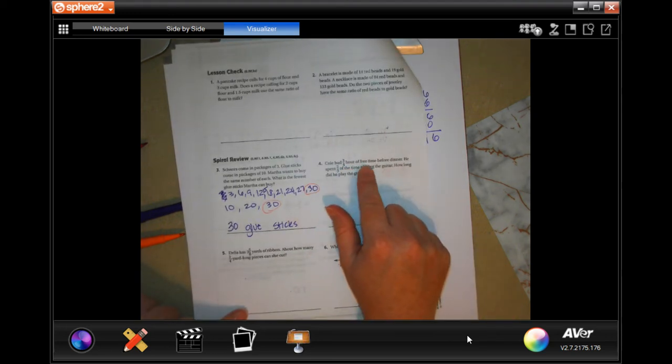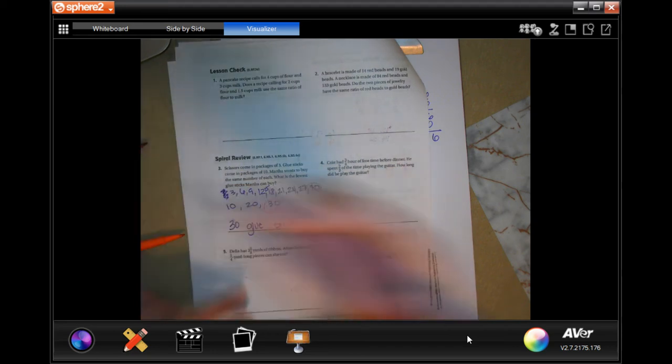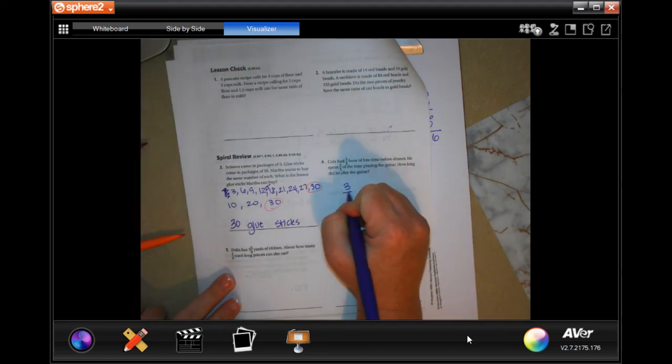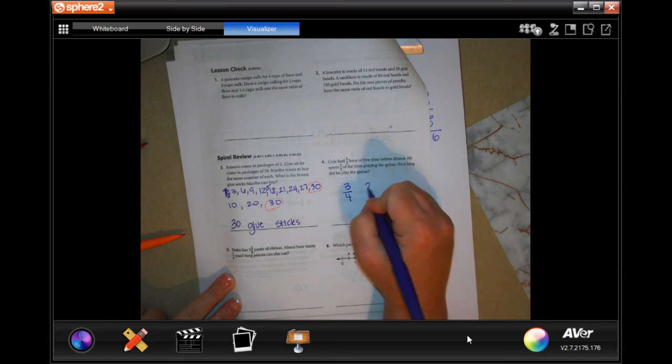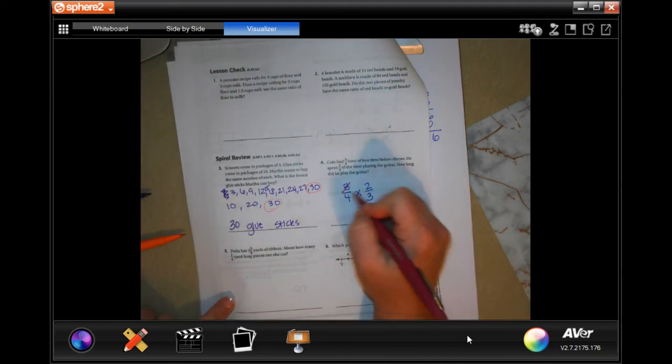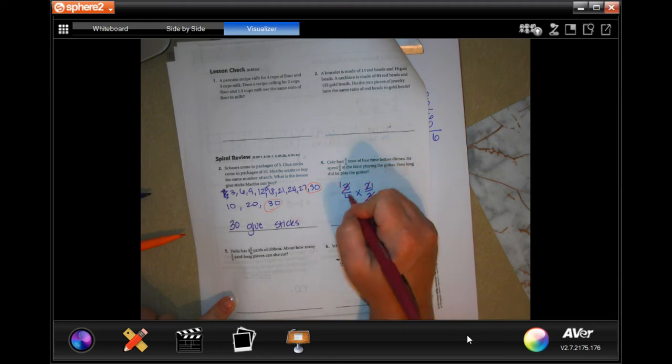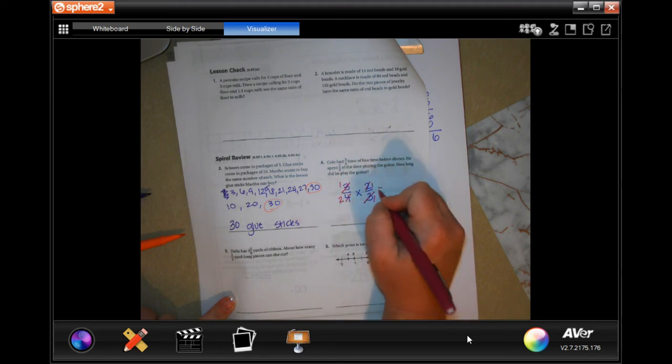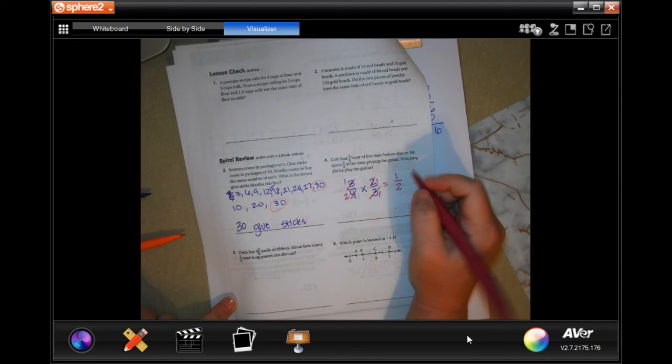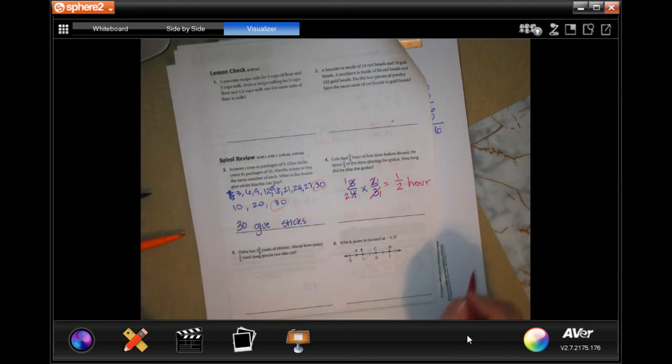Cole had three quarters of an hour of free time before dinner. He spent two thirds of that time playing guitar. How long did he play guitar? So he had three quarters of an hour, he spent two thirds of that time. Of means multiply, guys. Three and three are the same, which means you can cross that and put one. Two goes into two once, two goes into four twice. So when I multiply straight across I get half an hour.